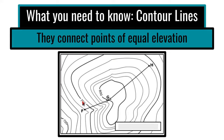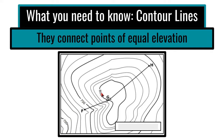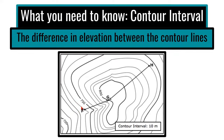If you find the next index contour line, you can figure out how much it's counting by. This one down here is 700, then 750, then 800 — so we know it's counting by tens: 700, 710, 720, 730, 740, 750, 760, 770, 780, 790, 800. The contour interval here is ten.